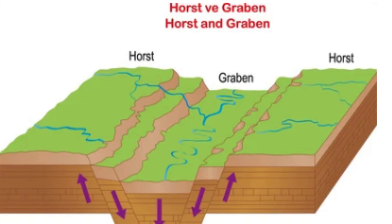Horsts and Grabens are often found together in a feature called a rift valley. Rift valleys are long, narrow valleys that form when the earth's crust is stretched and pulled apart. The central part of the valley is typically a Graben, while the surrounding areas are Horsts. Rift valleys can be found all over the world, including the East African Rift Valley and the Rio Grande Rift in North America.